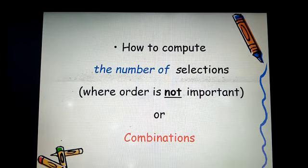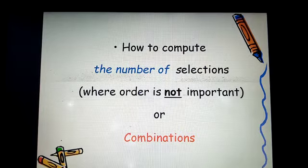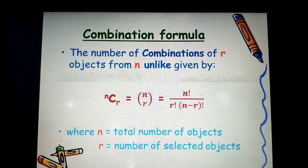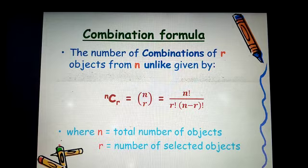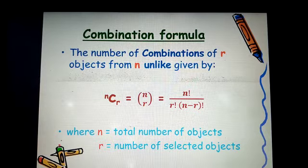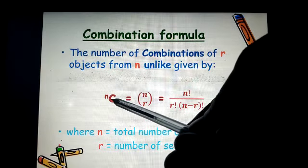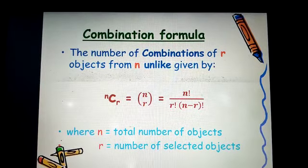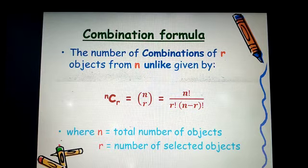How to compute the number of selections where order is not important, or combinations. We use the combination formula. The number of combinations of r objects from n is given by n combination r. This is another notation of presenting it, which is equal to n factorial over r factorial times n minus r factorial.